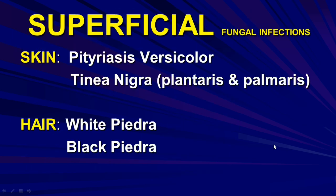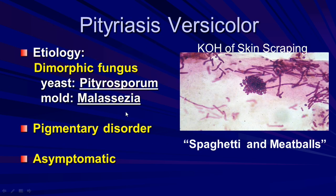Superficial fungal infections include pityriasis versicolor and tinea nigra. In the hair, white piedra and black piedra are present. This is the picture of the spaghetti and meatball appearance seen in KOH skin scraping — also seen in pityriasis versicolor. The yeast-mould is Malassezia furfur.